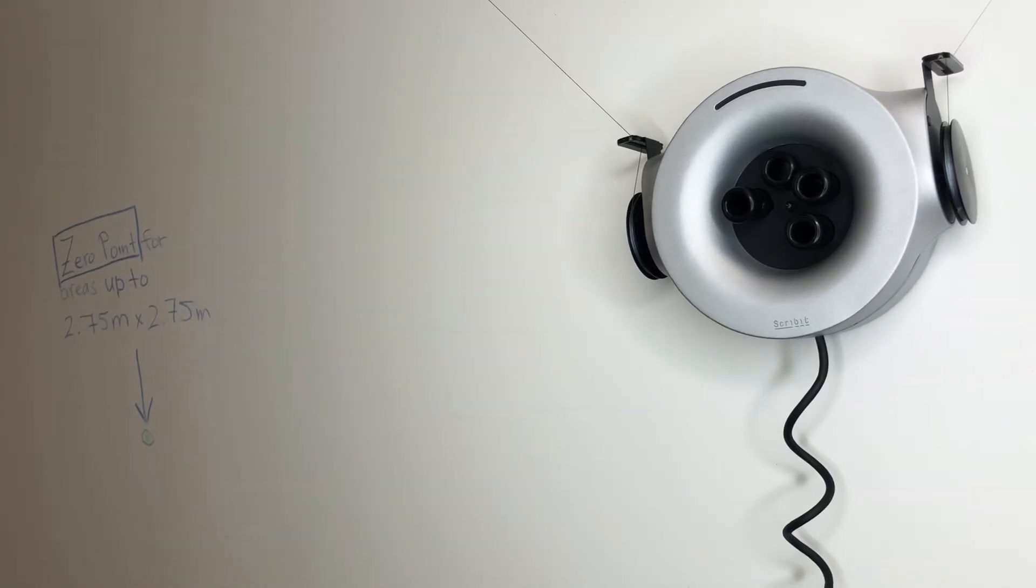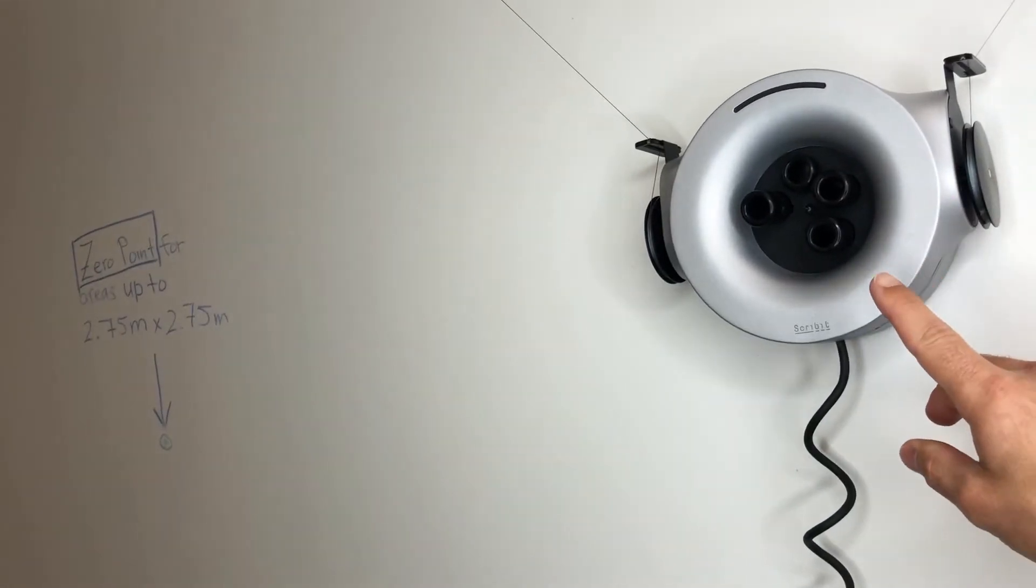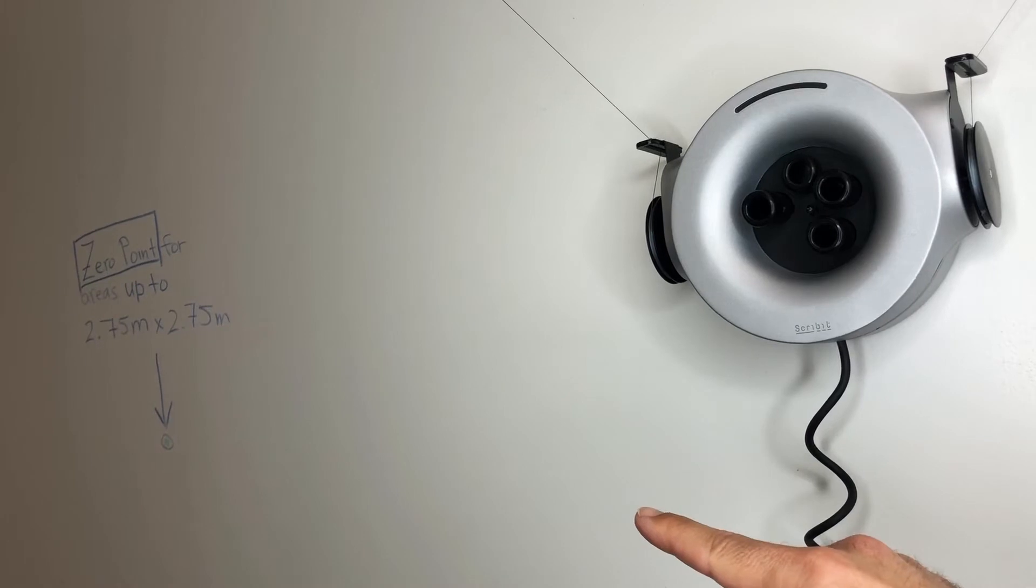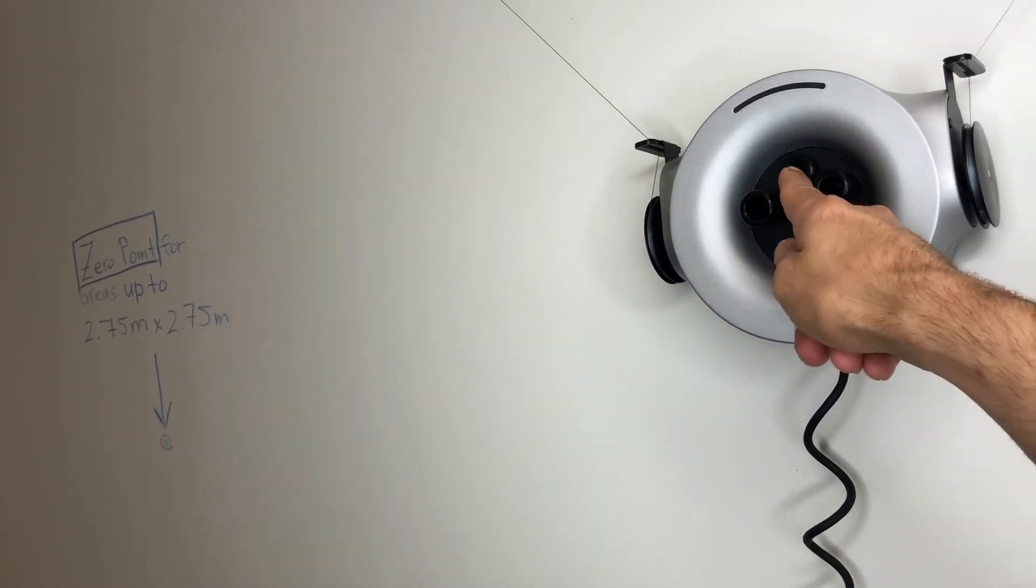So at this point the Scribet is on the wall somewhere in the middle, some random spot. The zero point is marked and we're using the zero point from the A1 A2 setup. So what you want to do is get this device over to the zero point and it needs to be visible through this hole.